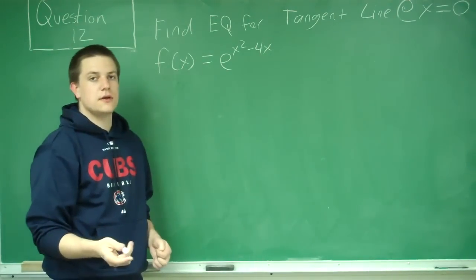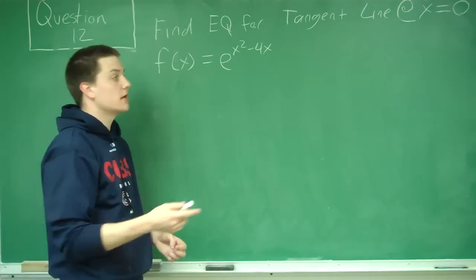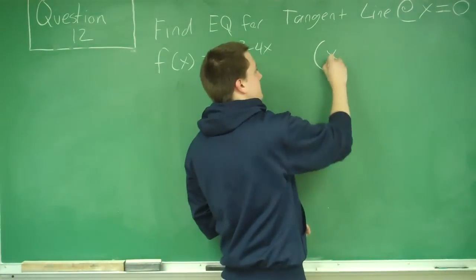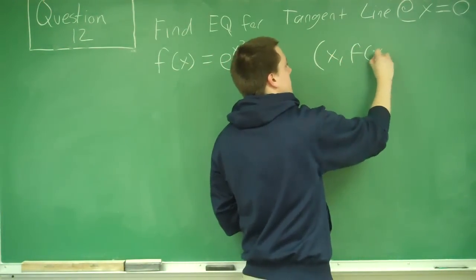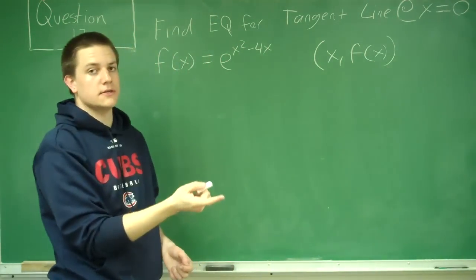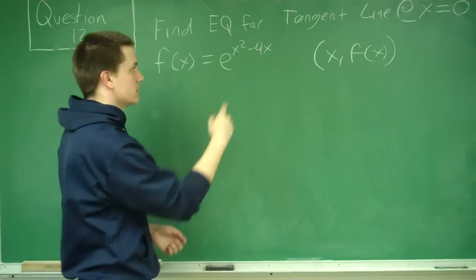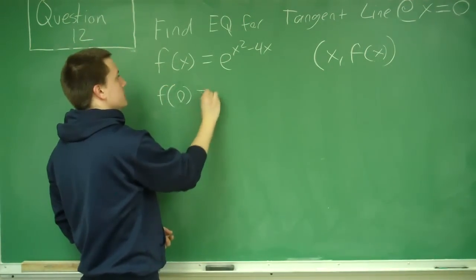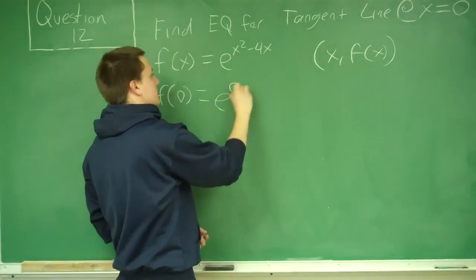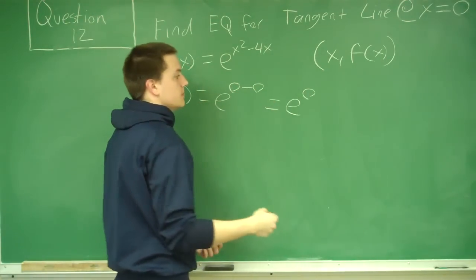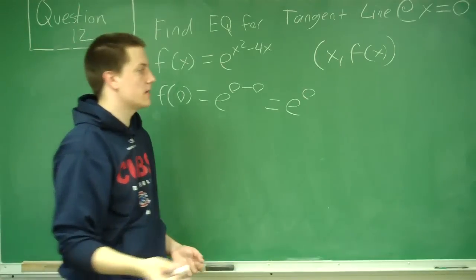The first thing we want to do is find the point on the graph that is at 0. Remember, any point on any graph is always in the form of x comma f of x. So first we need to plug 0 into f to find the corresponding y value. So f of 0 equals e to the 0 minus 0, which is obviously just e to the 0, and anything raised to the 0 power is just 1.